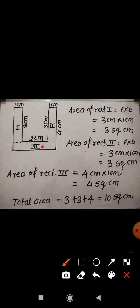Then we find out the area of the third rectangle. In the third rectangle, this side is 2 cm and this one is 1 cm each, so total will be 4 cm. So length will be 4 cm. Now for the breadth, this complete side is 4 cm, and out of this side, this one is 3, so remaining will be 1 cm. It means for the third rectangle, the length is 4 cm and breadth is 1 cm, so area will be 4 into 1, that is 4 square cm.